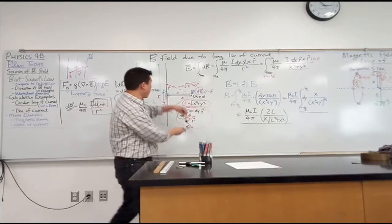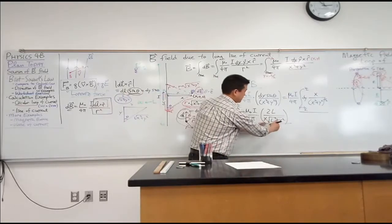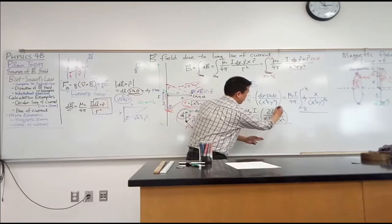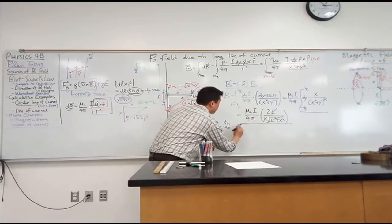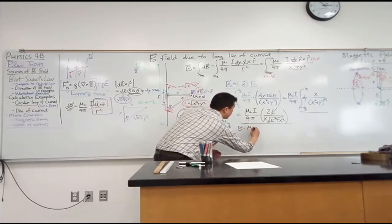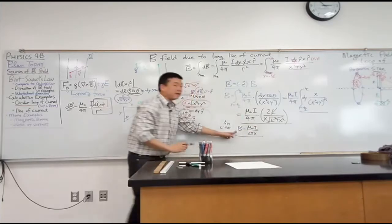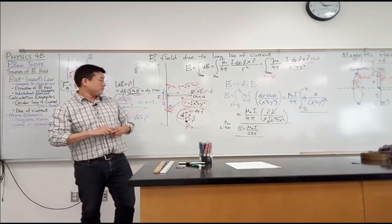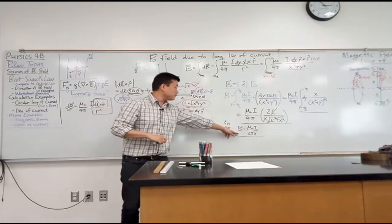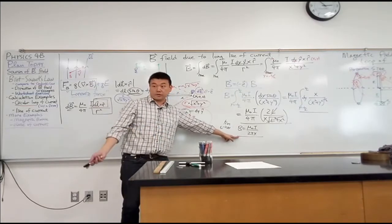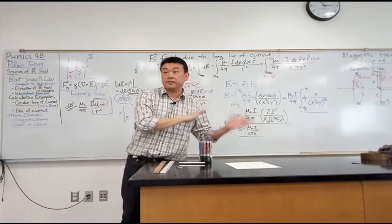In the limit where L goes to infinity, this is what happens. This becomes essentially L, so this will cancel out with this L here. In the limit that L goes to infinity, you get B equals mu naught I over 2 pi X. We are going to point this out later, especially as we do Ampere's Law. This begins to look very similar to magnitude of electric field due to a long line of charge, and we are going to bring attention to the similarity later.